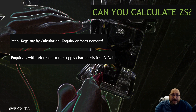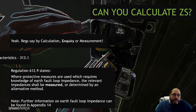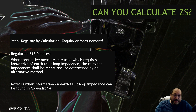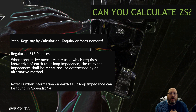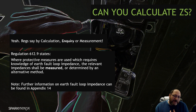You can only inquire a ZE or PFC — you do that when you're doing a new design and the supply characteristics are being collected for that part. Now, regulation 6129 states that if your protective measure requires knowledge of the earth fault loop impedance, the relevant impedances will be measured. Or they'll be determined by an alternative method.